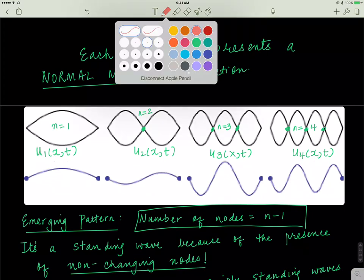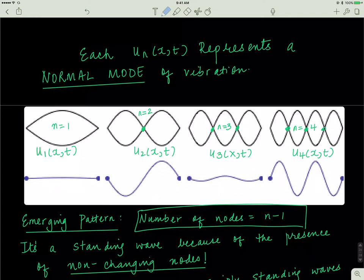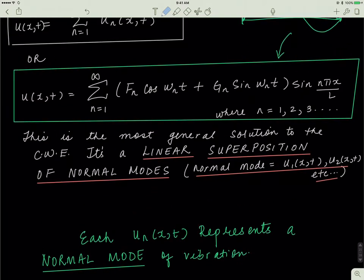So last time, we finally finished off by deriving a solution to the classical wave equation. And the solution looked something like this.